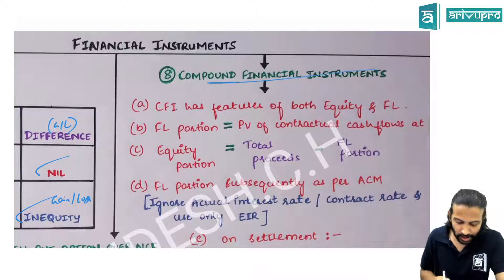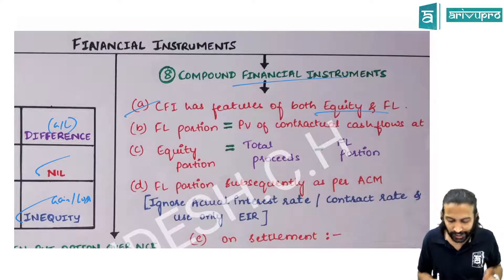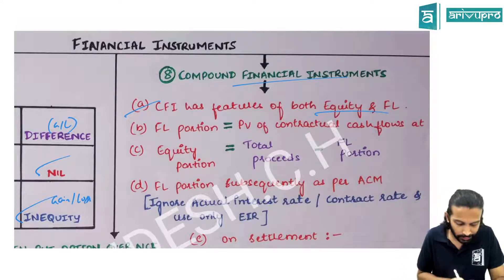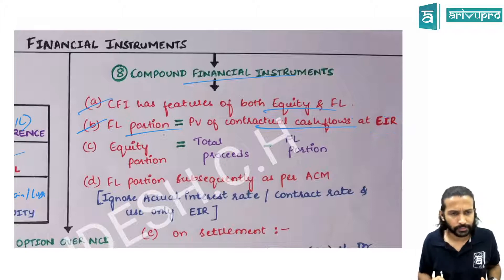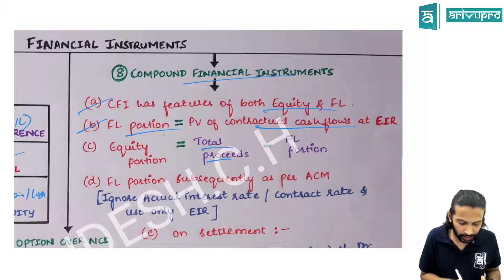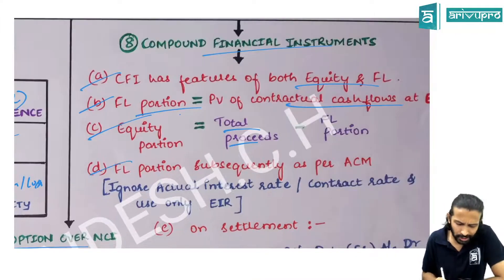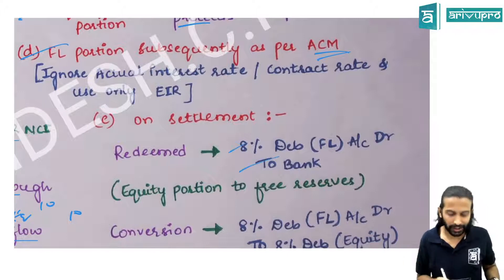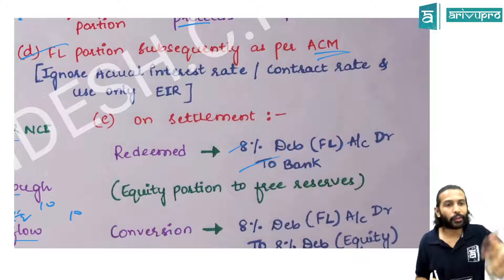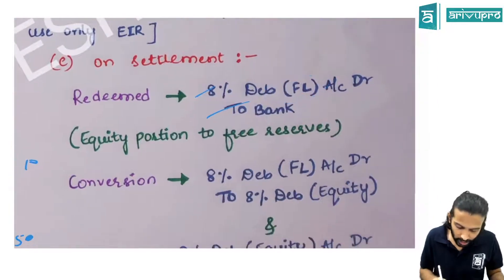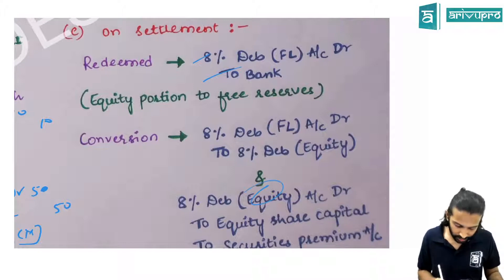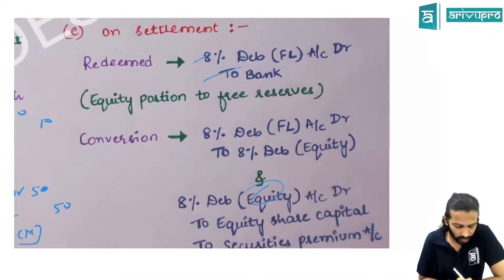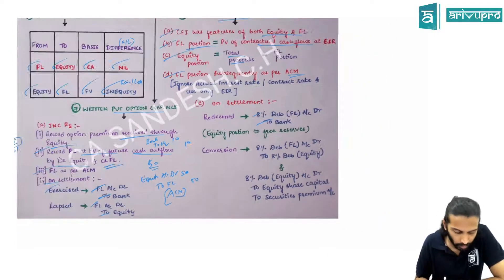Compound financial instruments have features of both equity and financial liability, so they must be split. First, find the financial liability portion: present value of future cash flows at the effective interest rate. Deduct that from total proceeds to get the equity portion. Financial liability is accounted under the ACM method. On redemption, debit financial liability and credit bank. On conversion, transfer the financial liability portion to equity, then to share capital and securities premium.